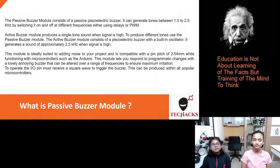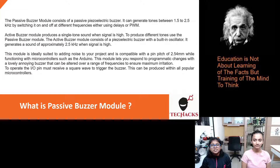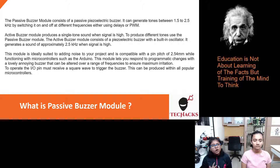So what are these? The passive buzzer module consists of a passive piezoelectric buzzer. It can generate tones between 1.5 to 2.5 kHz by switching it on and off at different frequencies, either using delays or PWM.